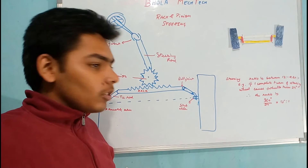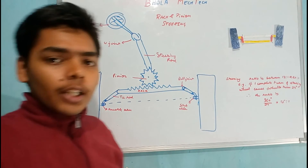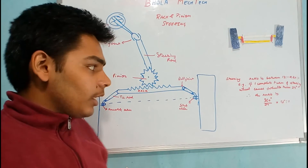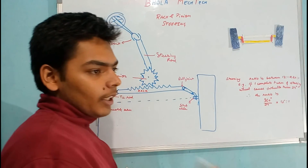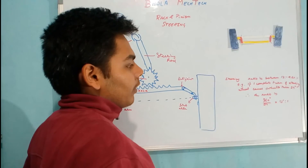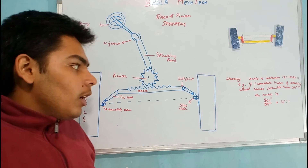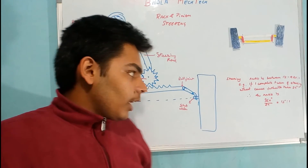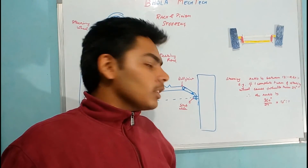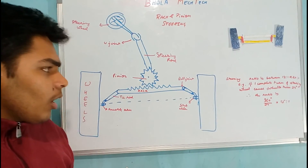There is another specification you must know about — the steering ratio. Steering ratio is the ratio of the rotation that you give to the steering wheel to the degree by which the wheel is turned. The steering ratio between the wheel and the steering wheel is about 12:1 to 20:1. For example, if one complete turn of the steering wheel turns the wheel to 24 degrees, then the steering ratio can be calculated as 15:1. This is the steering ratio.